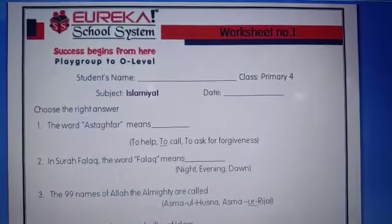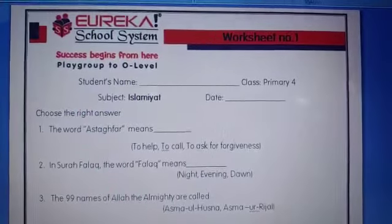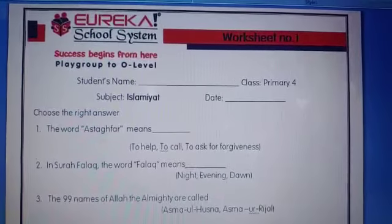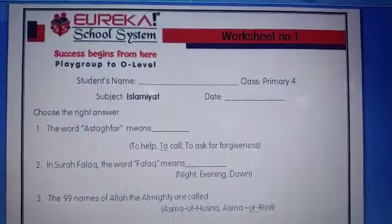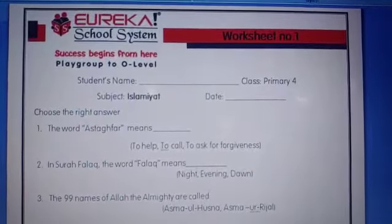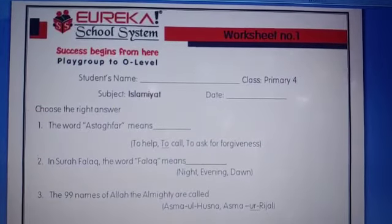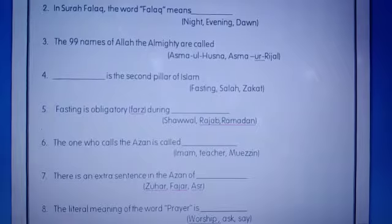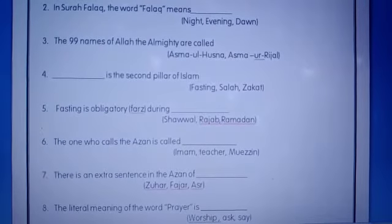The answer is dawn. Dawn and daybreak are the same thing. Number three: the 99 names of Allah the Almighty are called — Asma al-Husna or Asma al-Rijal. The correct answer is Asma al-Husna.